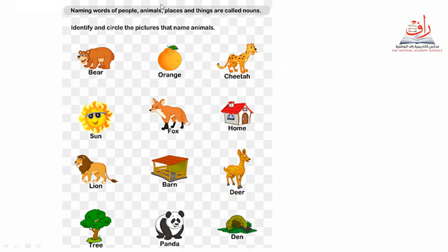I want to go back to see: the naming words of people, animals, places and things are called nouns. Let's do it again — identify and circle the picture that names animals.